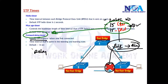This generally happens during convergence, because the switches need some time to decide or listen to all the values before making a decision. There will be a default timer set to 30 seconds, and that timer we call the forwarding delay timer.